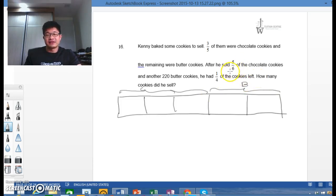Now he sold five-sixths of the chocolate cookies. How are we going to get five-sixths? Well, there are 3 parts, we cut them further. So we have five-sixths: 1, 2, 3, 4, 5, 6. But if we do this to the chocolates, we must do the same for the butters. Then another 220 butter cookies, he had one quarter of the cookies left.